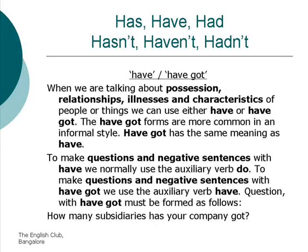Have and have got. When we are talking about possession, relationships, illnesses, and characteristics of people or things, we can use either 'have' or 'have got.' The 'have got' forms are more common in an informal style. 'Have got' has the same meaning as 'have.' To make questions and negative sentences with 'have,' we normally use the auxiliary verb 'do.' To make questions and negative sentences with 'have got,' we use the auxiliary verb 'have.'